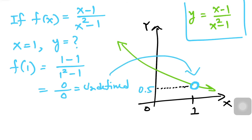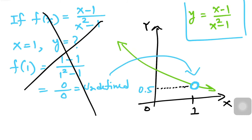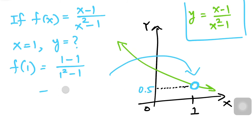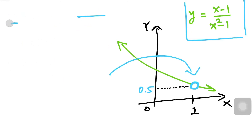Notice we have a small hole in the graph at that point, which is why we get undefined. This doesn't give us much information about the graph at that specific point. So we can use a limit to find out what's going on around x = 1. Limit does not care about what's happening at that exact x-value — only around it.